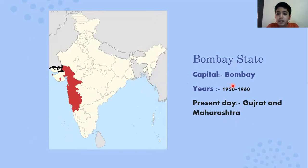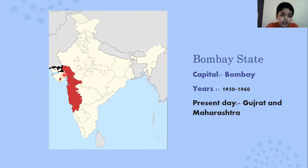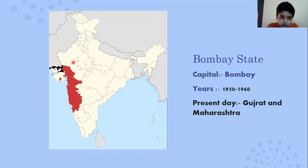Next is Bombay State. The capital was Bombay and it existed from 1950 to 1960. Present day, it covers Gujarat and Maharashtra. This part is Goa, this is Maharashtra, and this is Gujarat.